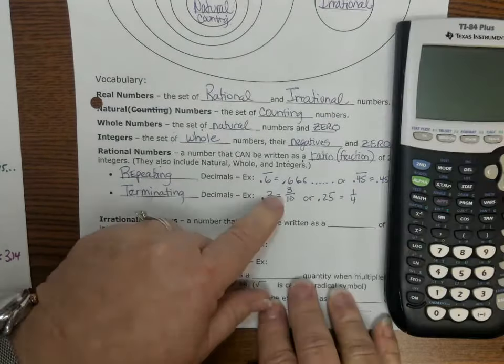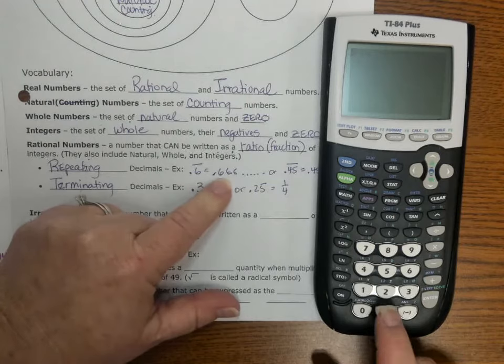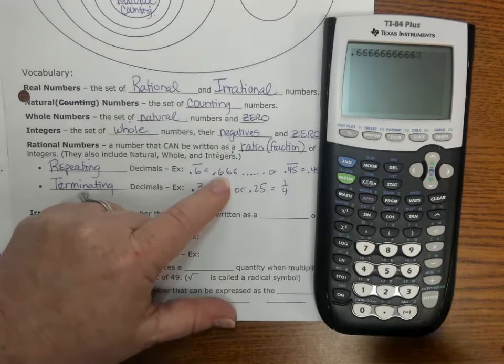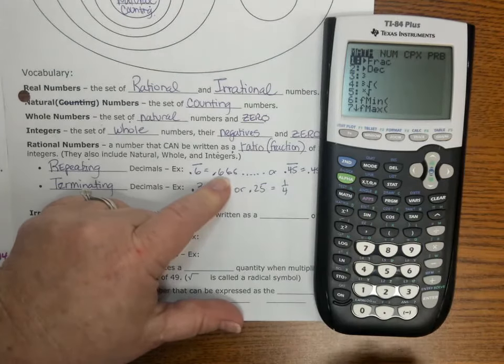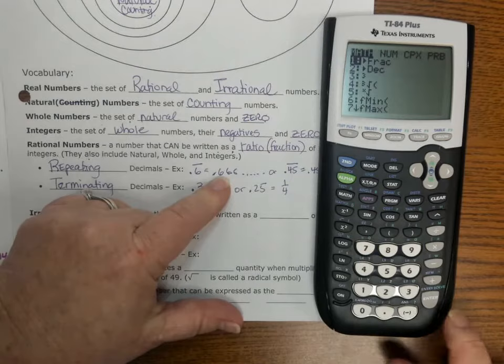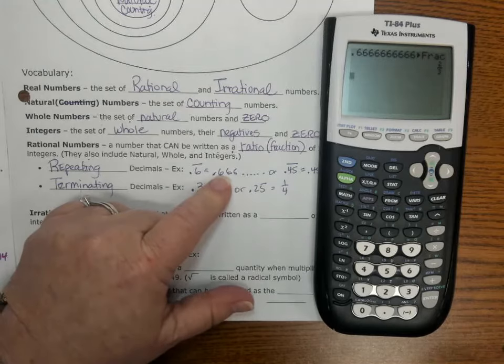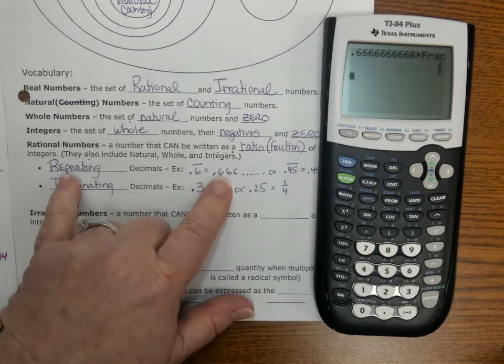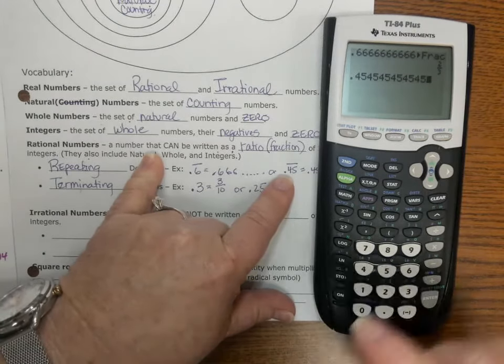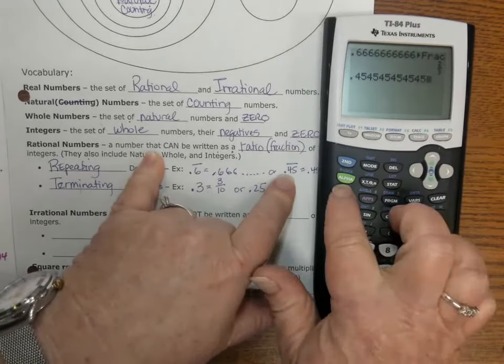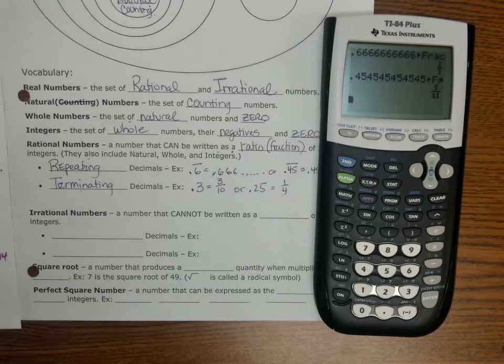Remember, to get that repeating decimal, some of you made this mistake on the practice that we did earlier. You have to make sure you do that .6666666666, three-quarters of the way across the calculator, then hit your math key. You see how fraction is highlighted? You can either hit 1 and enter, or you can just hit enter, enter, and it'll give you a fraction. If it did not give us a fraction, then we know it is not rational. I'm going to do the .45454545454545, make sure you stop on the 5, not on the 4, hit math, enter, enter, and I get 5 elevenths. So it is a rational number.